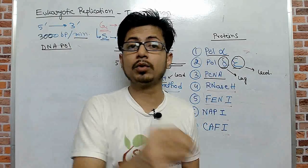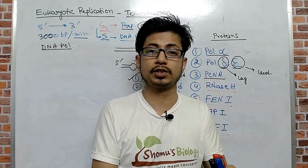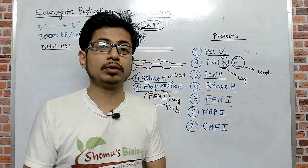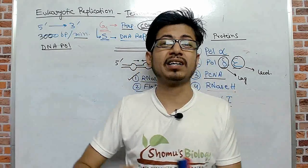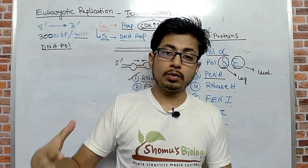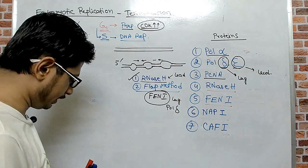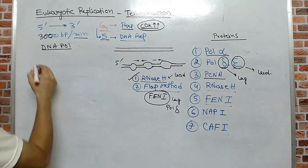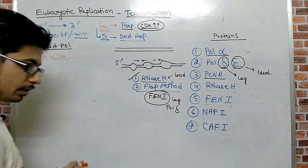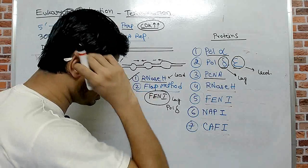If you don't know about that, please go back to the eukaryotic transcription elongation video. In this video we want to talk about termination in a whole new definition. The very first thing to discuss about termination in eukaryotic DNA replication is the termination site — eukaryotes have a specific consensus sequence.